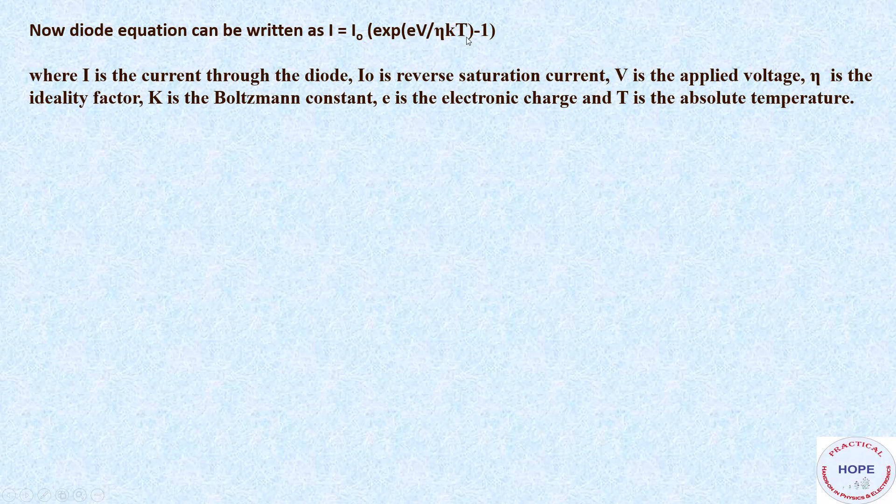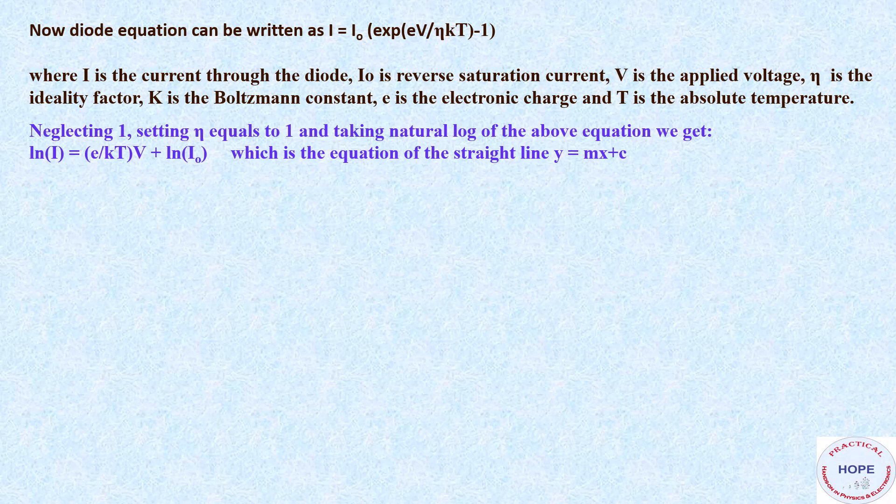So this minus 1 we are going to neglect and take natural logs on both sides of this equation. So now we'll get an equation like this, which is the equation of a straight line y equals mx plus c. So this ln I is y, E by kT is m, V is our x and ln I0 is c.